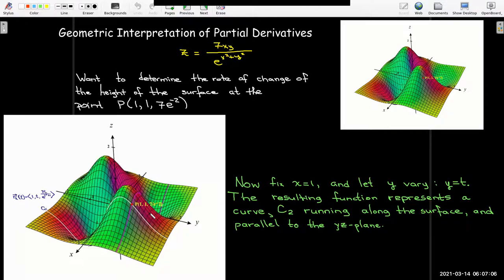And we can figure out its parametric representation, x is going to be 1, constant 1, y varies as t. And then if I put again, x equals 1, y equals t, I'll get the equation for the z component of that vector representation of the curve.